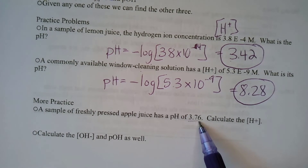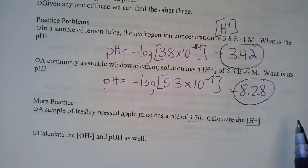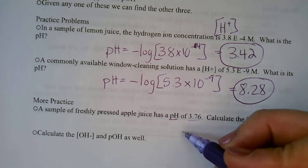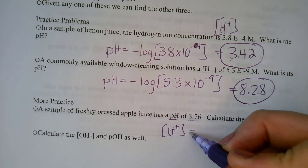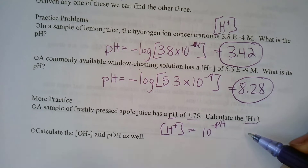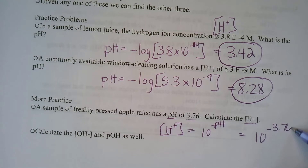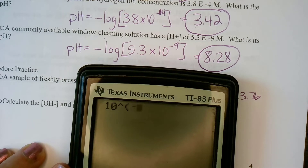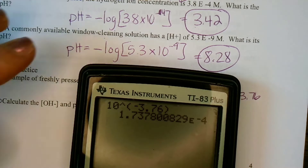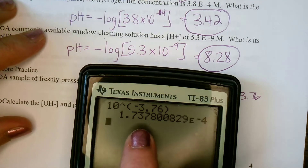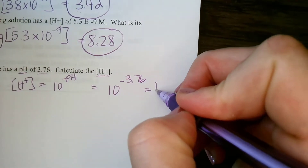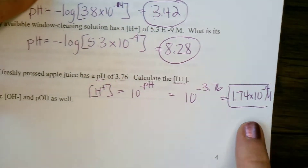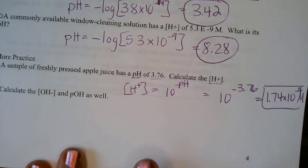Next, apple juice has a pH of 3.76 and we want the hydronium ion concentration. We use [H+] = 10^(−pH) = 10^(−3.76). Plugging into the calculator gives us 1.74×10⁻⁴ M — that's molarity, concentration in moles per liter.